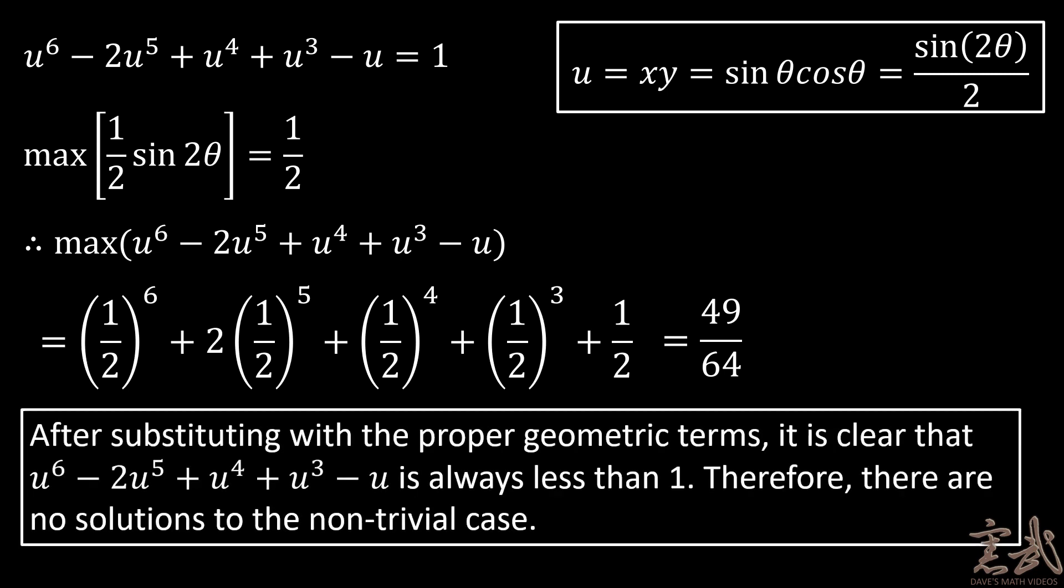As we can see, after substituting with the proper geometric terms, it is clear that for the substitution, u to the sixth minus 2u to the fifth plus u to the fourth plus u to the third minus u, the value of this will always be less than 1. Therefore, there are actually no possible solutions to the non-trivial case.